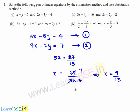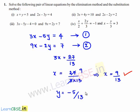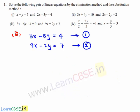We have found the value of y to be minus 5 by 13. Therefore the solutions for the given pair of linear equations are x equals 9 by 13 and y equals minus 5 by 13. Now let us solve the given pair of linear equations by the substitution method.